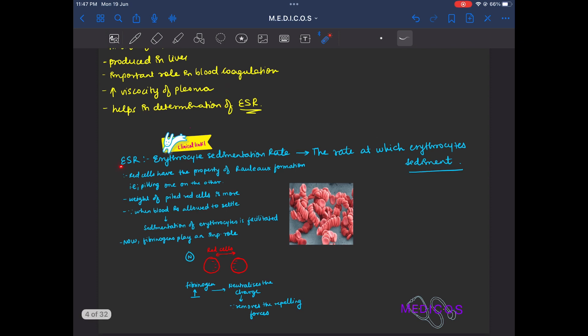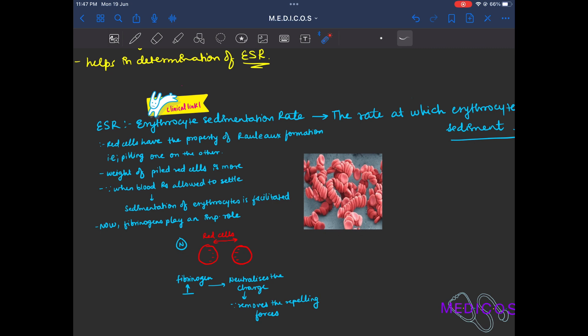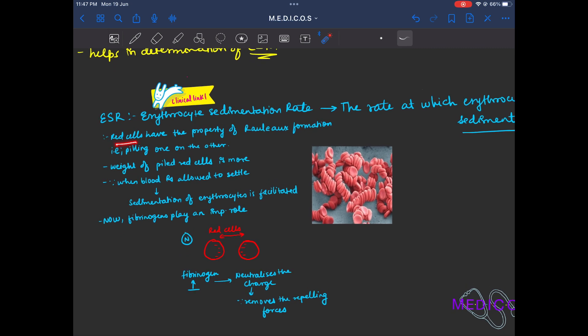ESR is erythrocyte sedimentation rate. The rate at which erythrocytes sediment. In normal cases, erythrocytes have a property of rouleaux formation. What is rouleaux formation? Piling of one RBC on another.